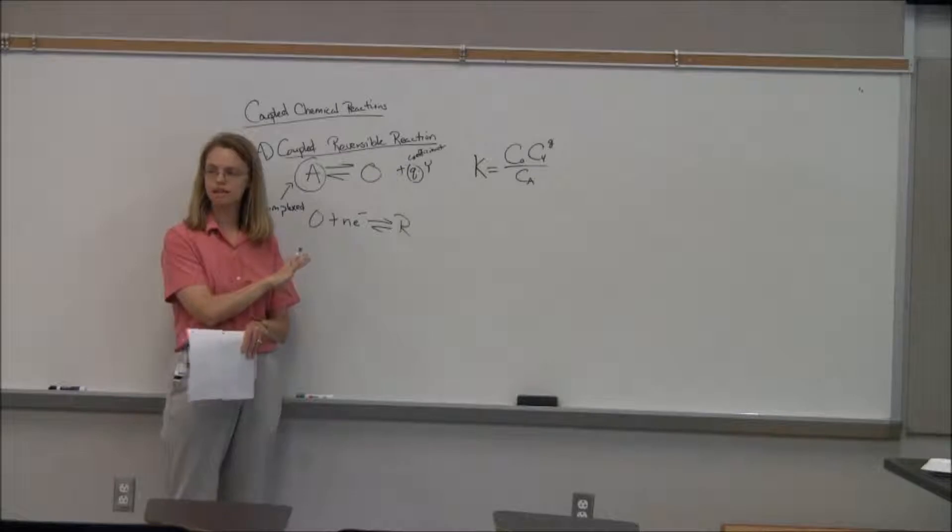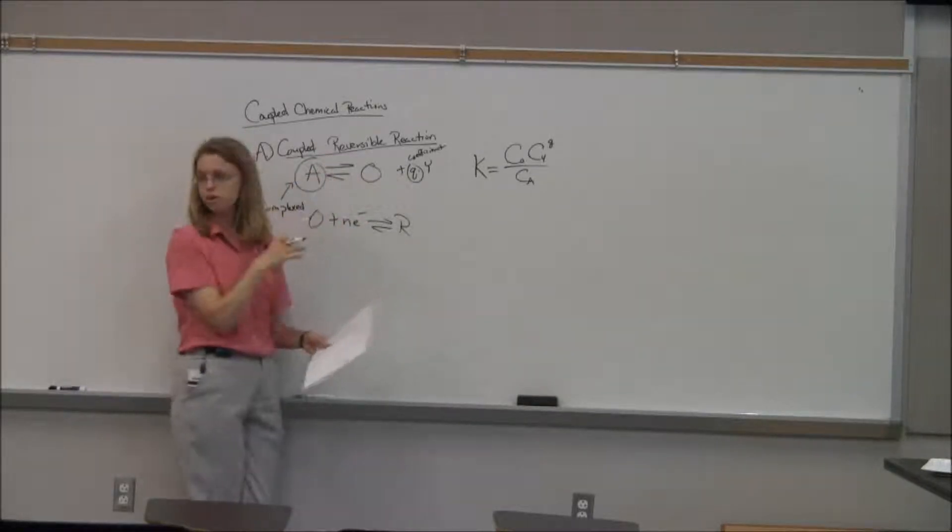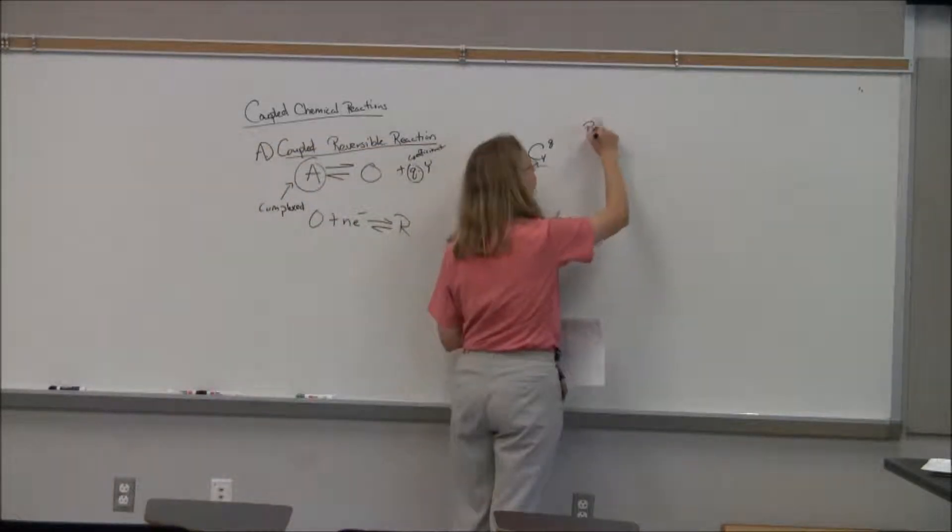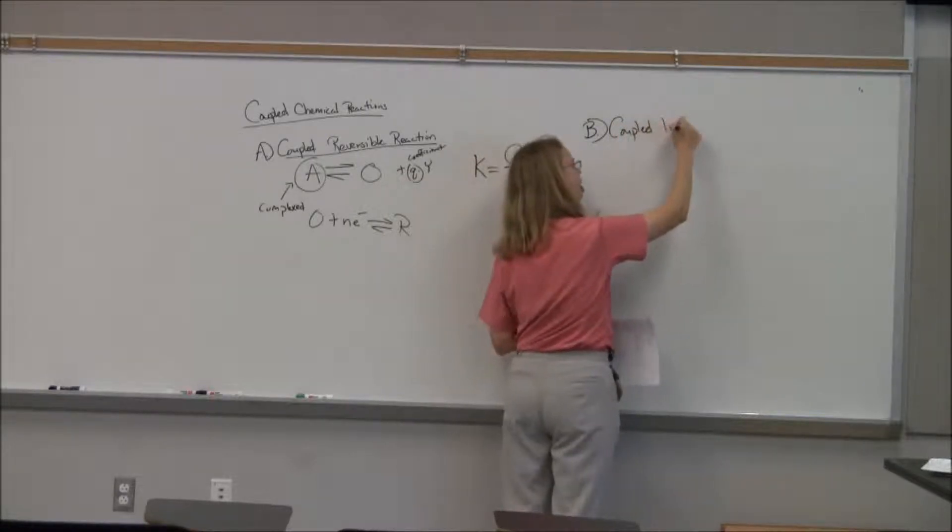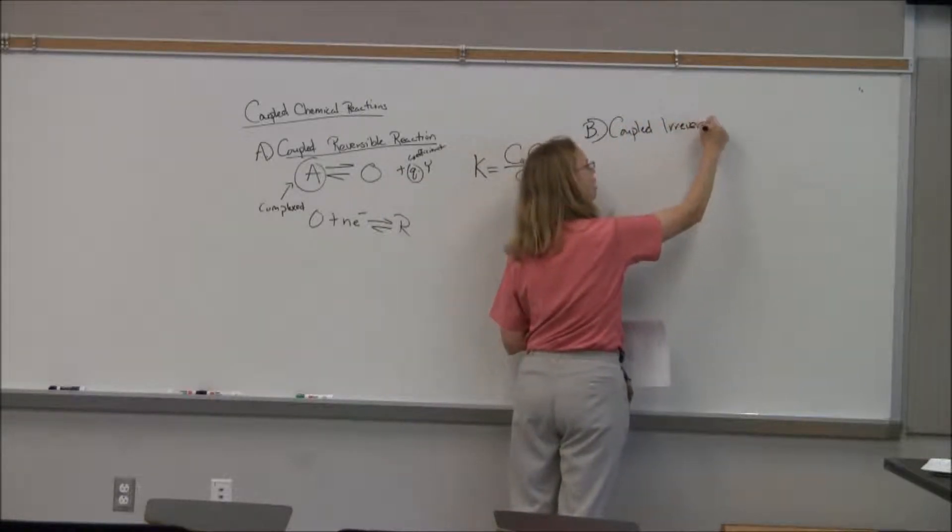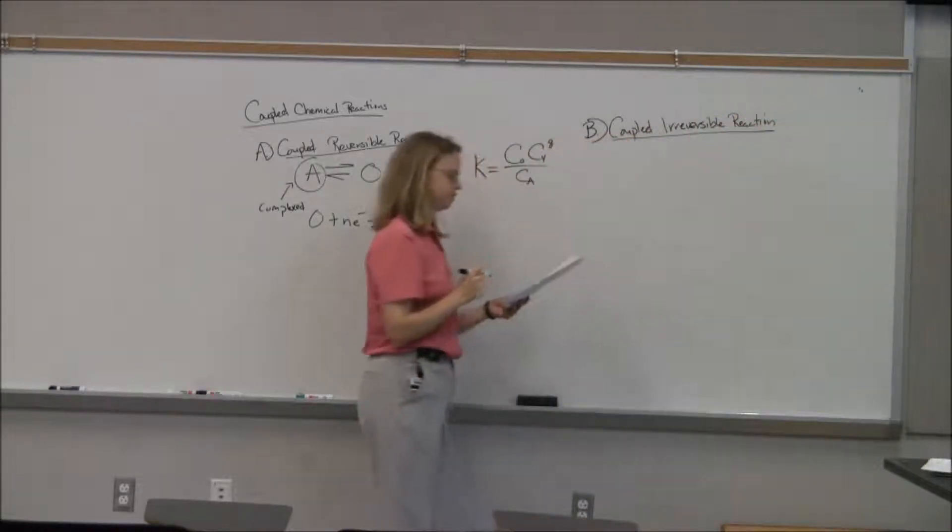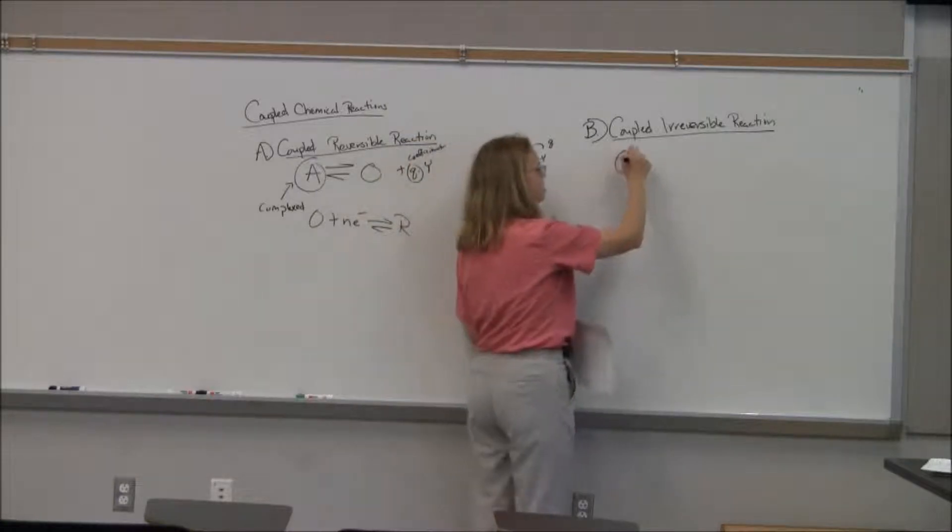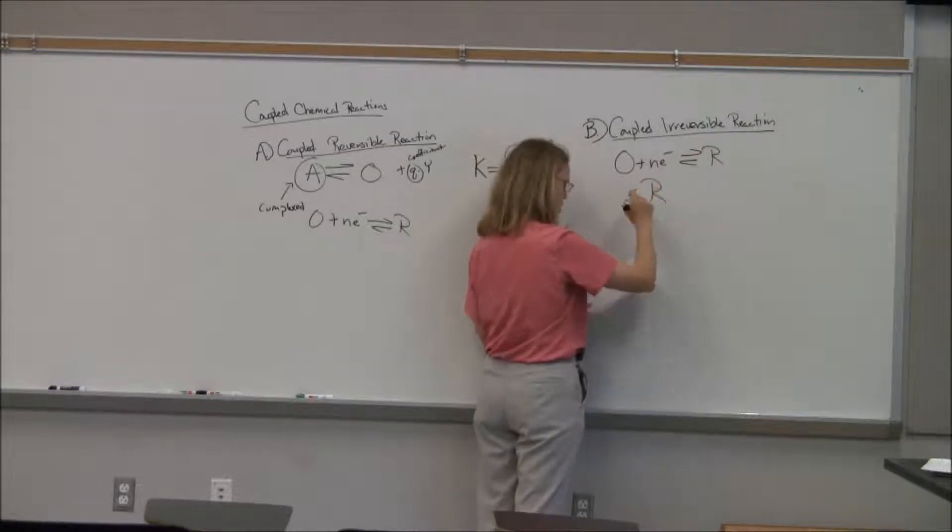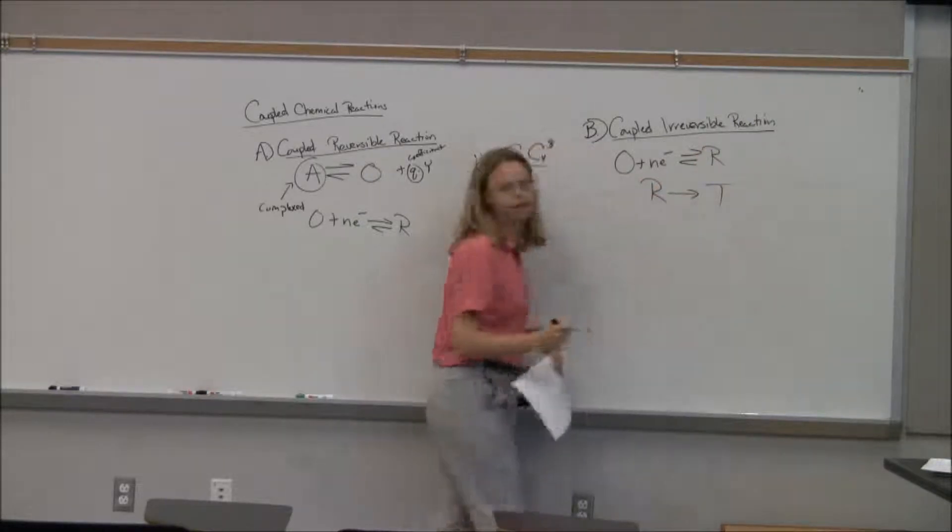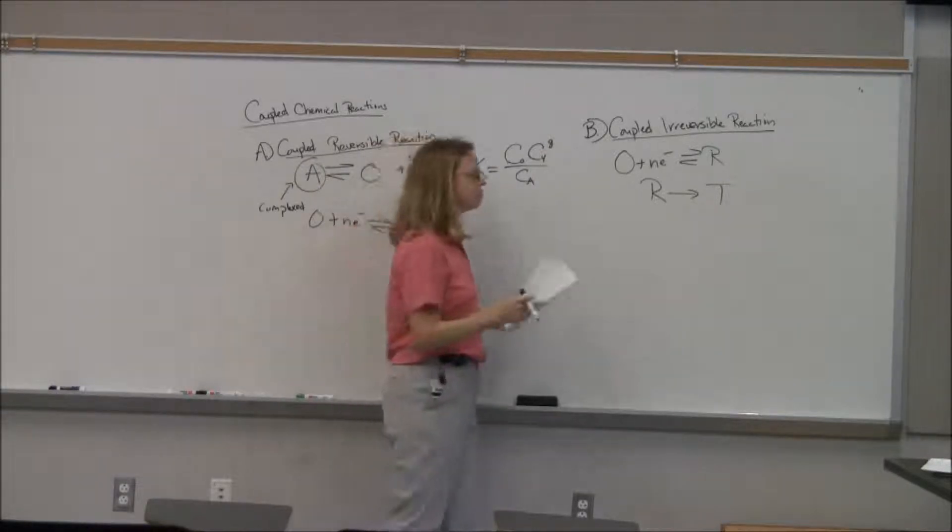And so, it gives you kind of a different sort of Nernst equation that you would do. This one is like a reversible reaction, meaning this can go back and forth. We don't do too much of this. So, let's look at a couple of irreversible reactions. This one goes something like this: O plus nE goes to R, and then R irreversibly goes to something else. So R goes to T.